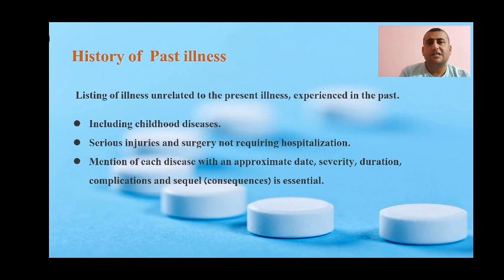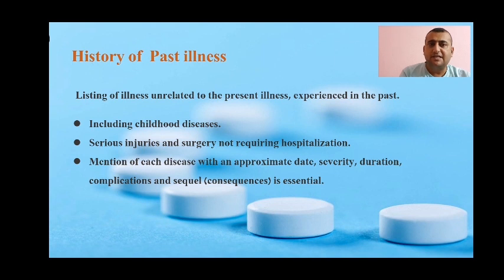Once you have completed history of present illness, you should ask for history of past illness. Here we list all illnesses unrelated to the present illness that were experienced in the past. These include childhood diseases, serious injuries, and surgery that did not require hospitalization. You have to mention each disease with an approximate date, severity, duration, condition, complication, and sequelae.